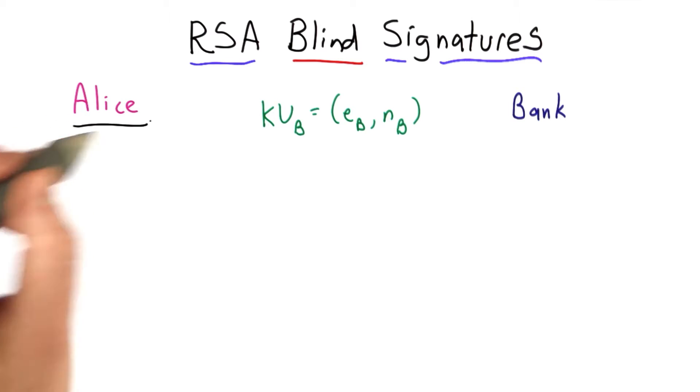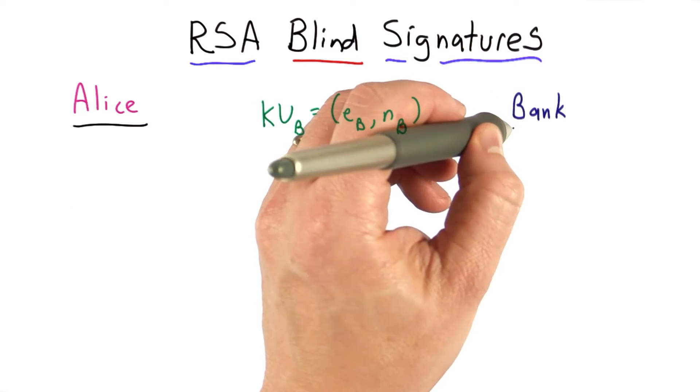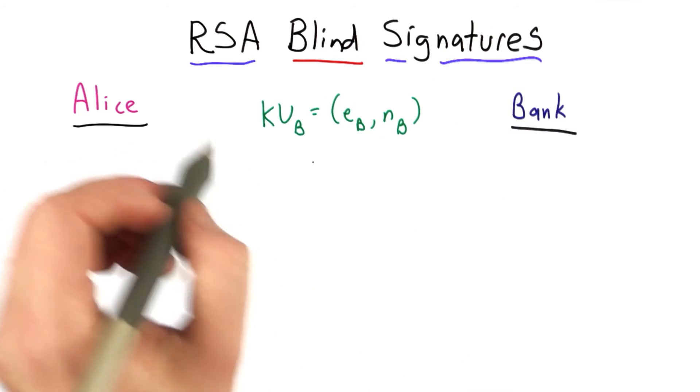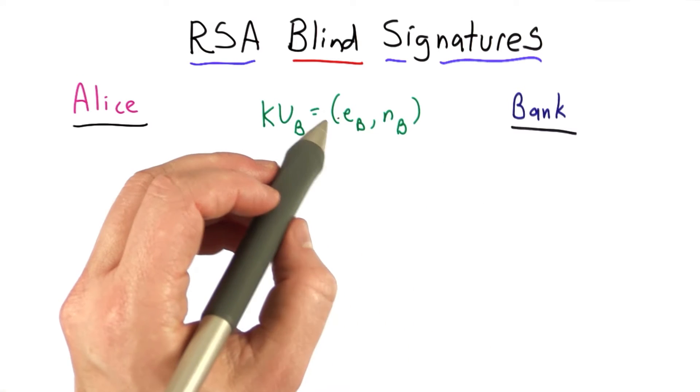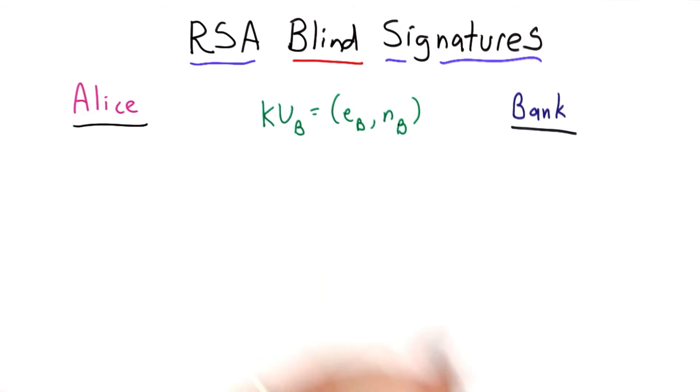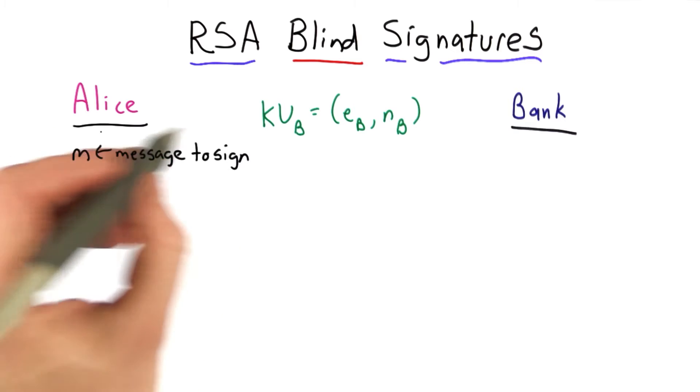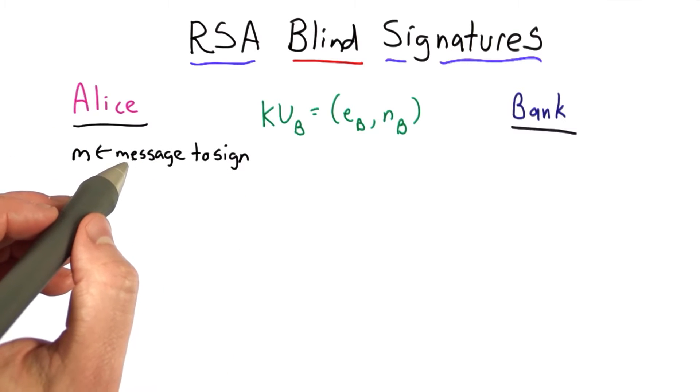So here's the protocol. We'll assume Alice wants the bank to sign a message, and Alice knows the bank's public key. It's an RSA key pair with the exponent and a modulus. So m is the message Alice wants the bank to sign.